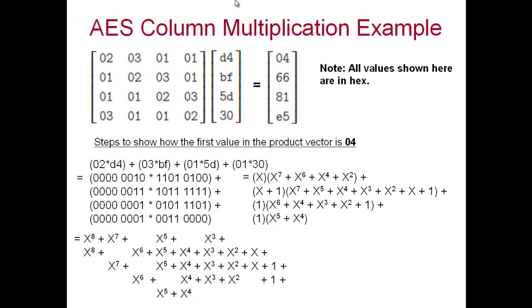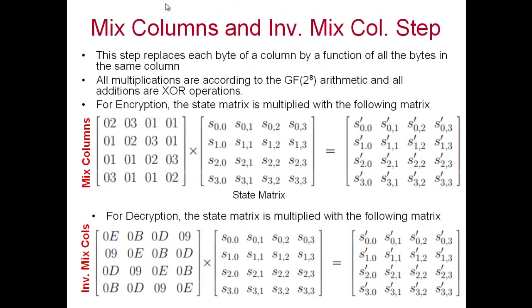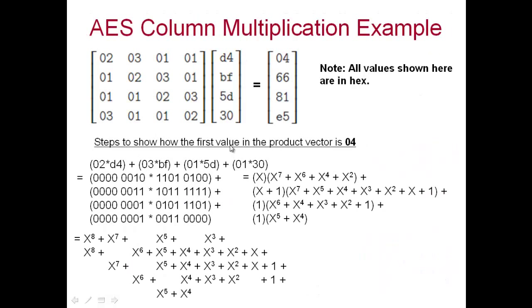Now let's use this knowledge to perform the AES mix columns operation. We take a column from the state matrix — assume this is the first column — and multiply it by the fixed AES matrix. To get the first element of the result, we multiply the first row of the fixed matrix by the first column of the state: 02 × D4 + 03 × BF + 01 × 5D + 01 × 30.